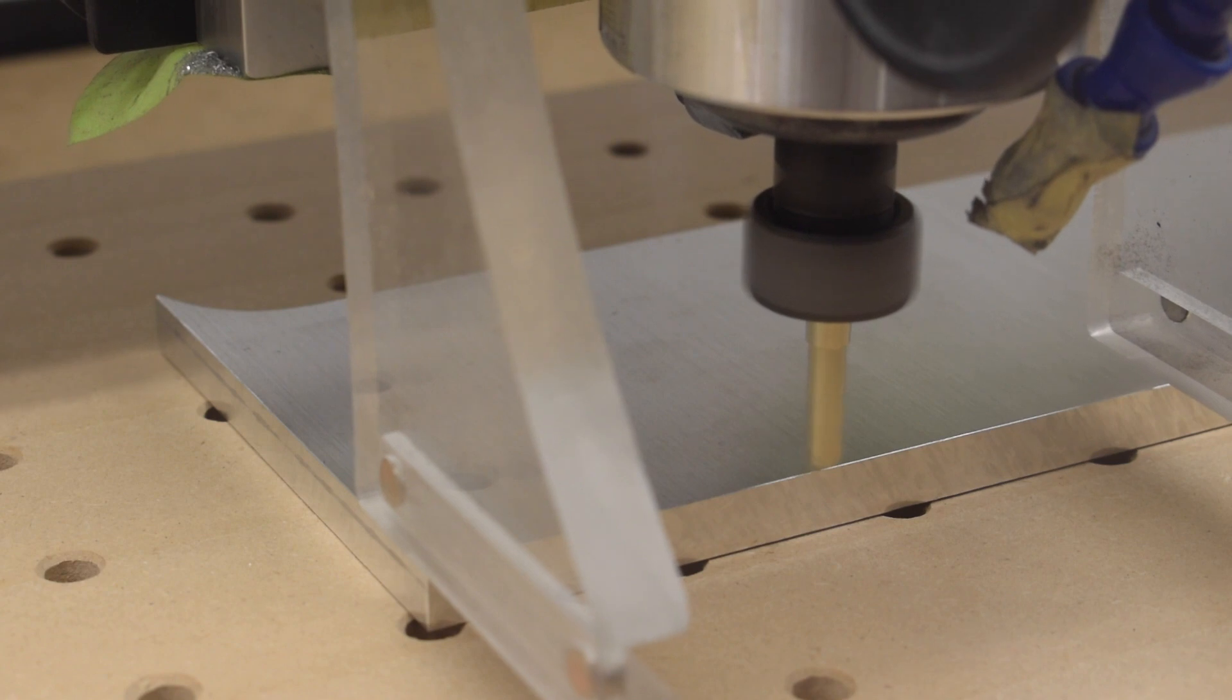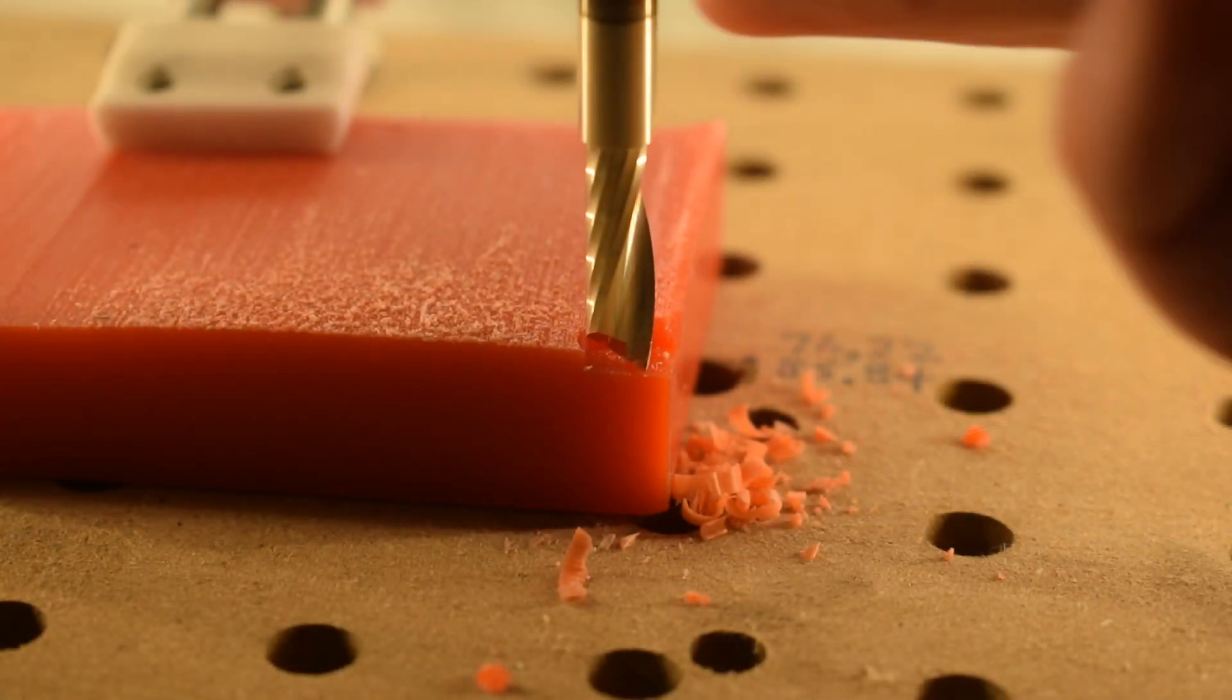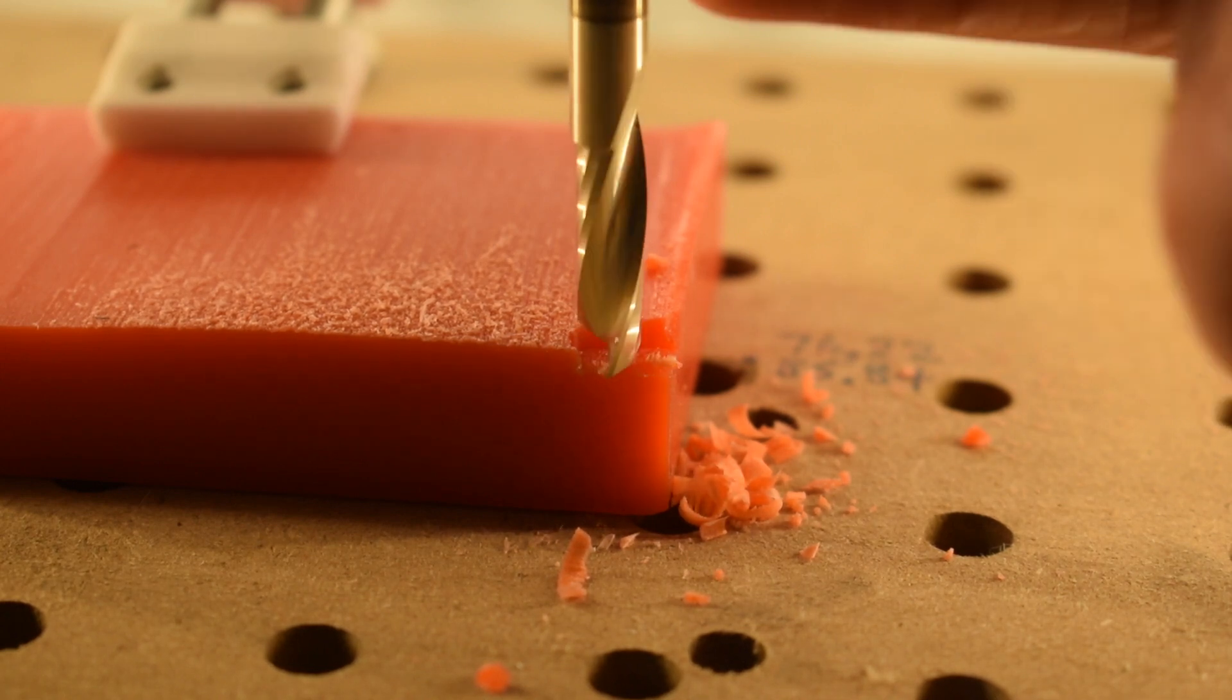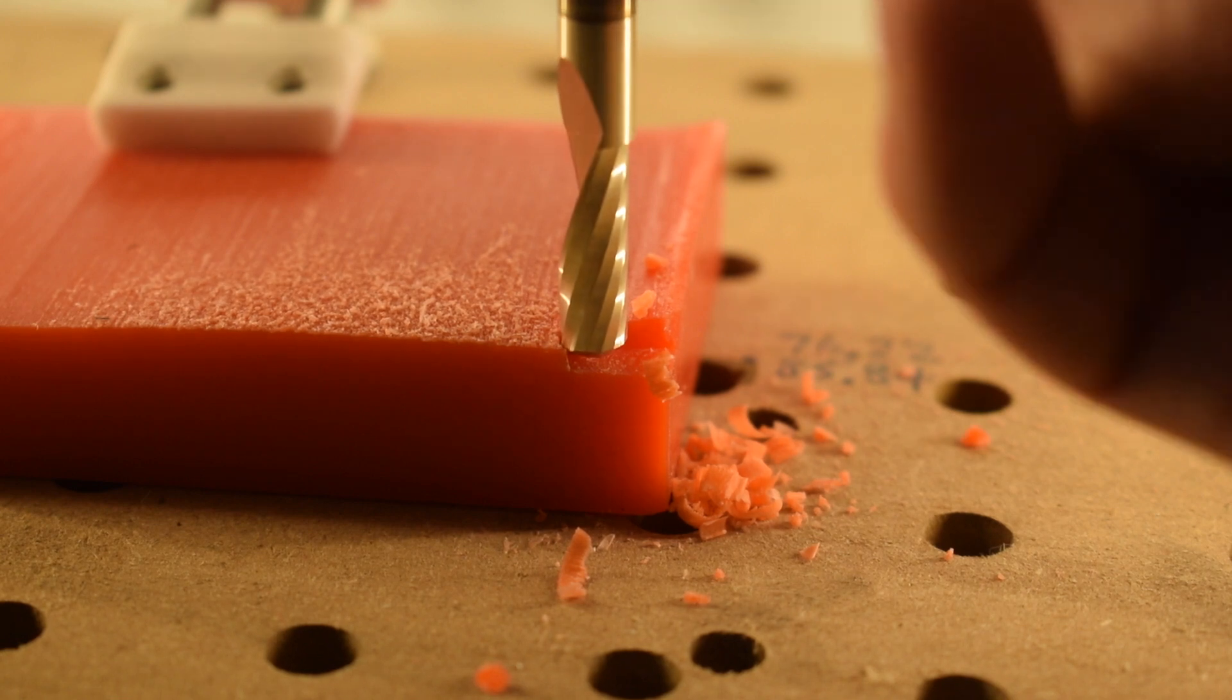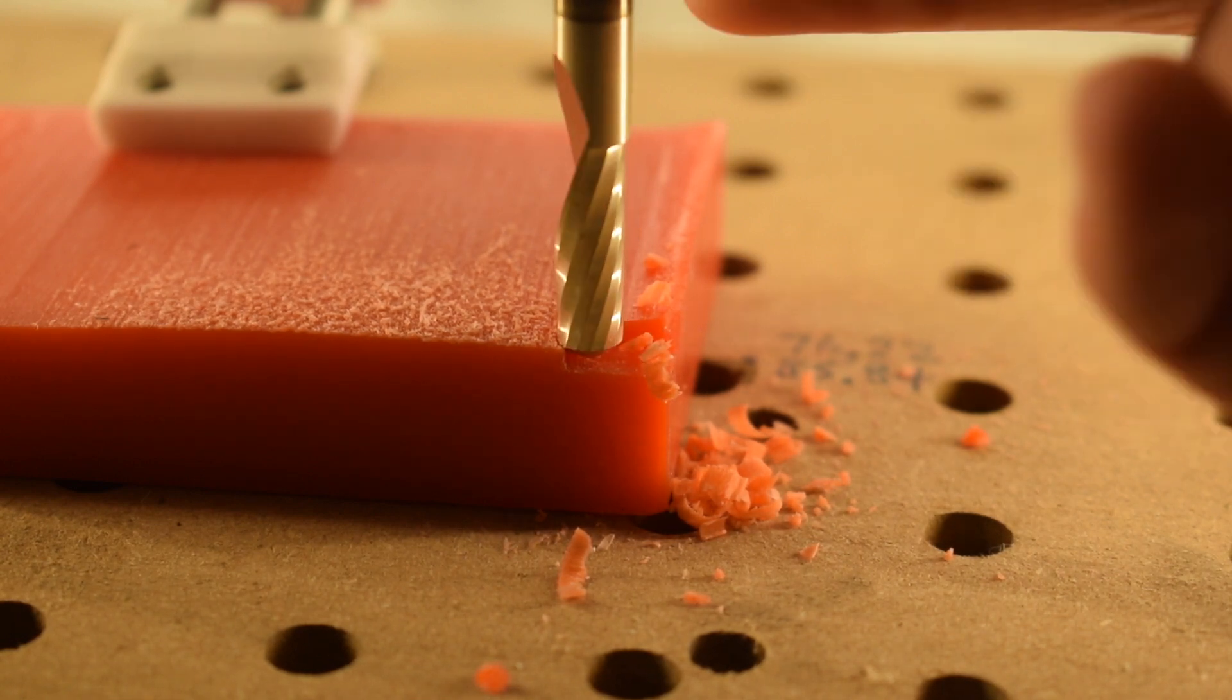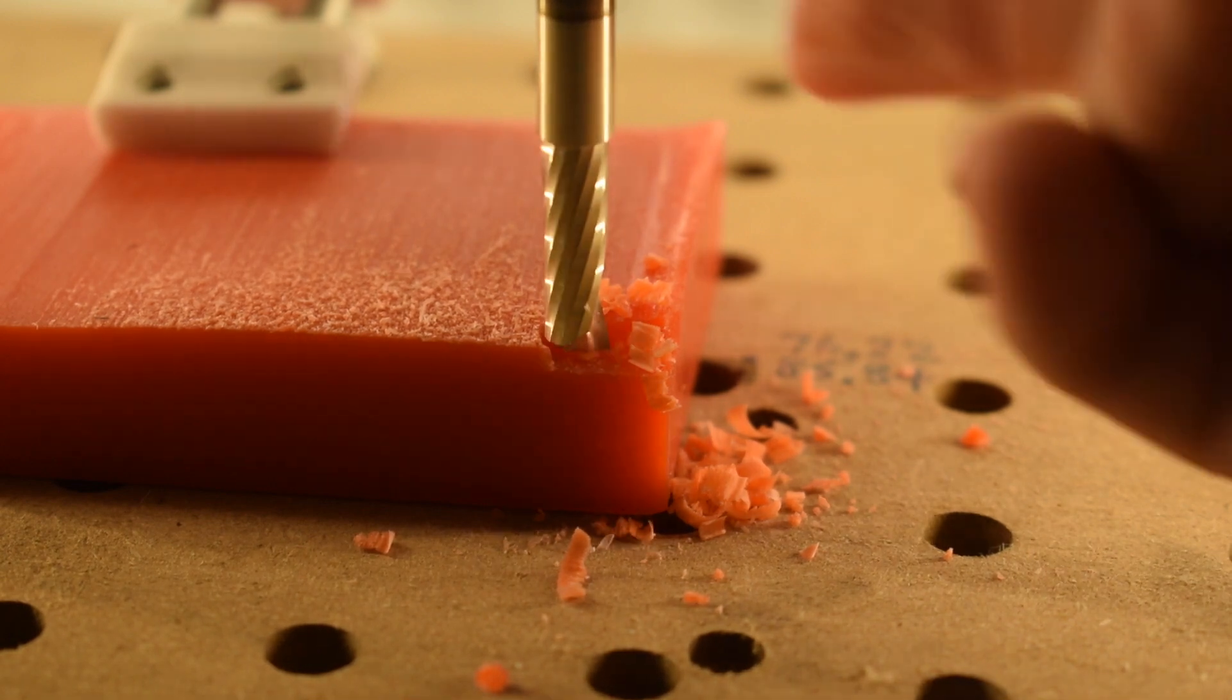When you're selecting your cutting parameters, you generally want to ensure that you're taking a healthy chip load. Chip load for the uninitiated is how far the end mill moves between each cut. If, for example, you had a single flute cutter spinning at 100 RPM, moving at 10 inches per minute, then your chip load would be 0.1 inches. Every tenth of an inch, your cutter would make one revolution.